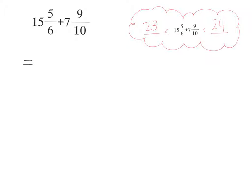How should I rewrite this problem so that it's easier for me to solve it? You got it: 15 plus 7 plus 5/6 plus 9/10. It's easier when I have the whole numbers together and the fractions together because now I can add the whole numbers first. What's 15 plus 7? 22. So now my problem is 22 plus 5/6 plus 9/10. Are we ready to add the fractions? No.